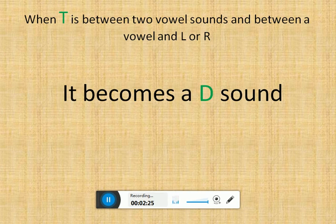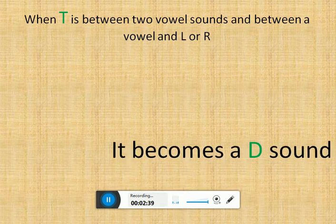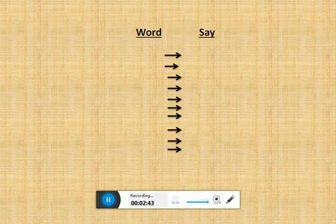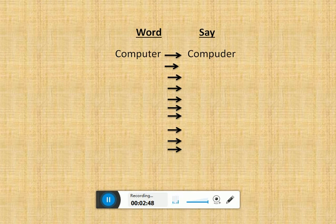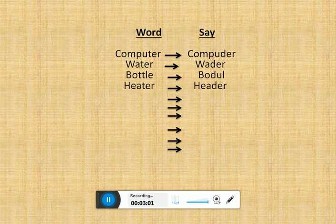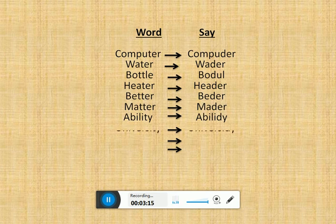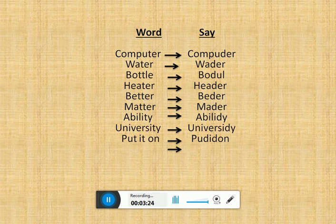Isn't it like magic where we always get confused? Let's see some words and how we pronounce them. 'Computer' — in American we say 'computer.' 'Water' — we say 'water.' 'Bottle' — we say 'bottle.' 'Heater' — we say 'heater.' 'Better' — we say 'better.' 'Matter' becomes 'matter.' 'Ability' becomes 'ability.' 'University' becomes 'university.' 'Put it on' — it's called 'put it on.' 'Great idea' becomes 'great idea.'